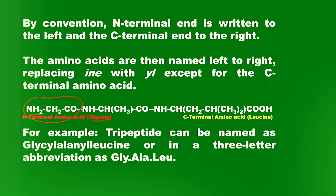If we look at this tripeptide and see that it has a free COH (COOH) group, then we call it the C-terminal amino acid — and because it is leucine, it is the C-terminal. The first amino acid, which has the free NH2, is glycine, so it is the N-terminal amino acid.